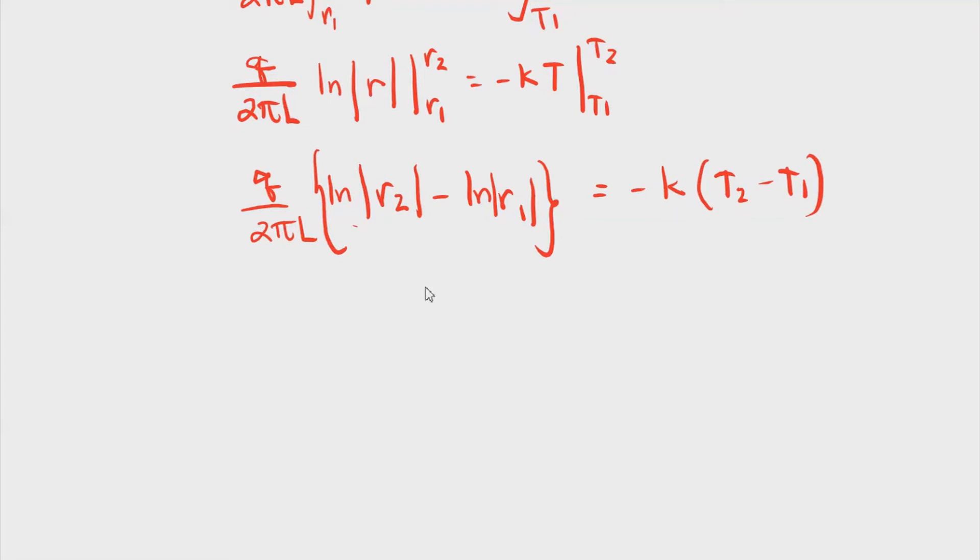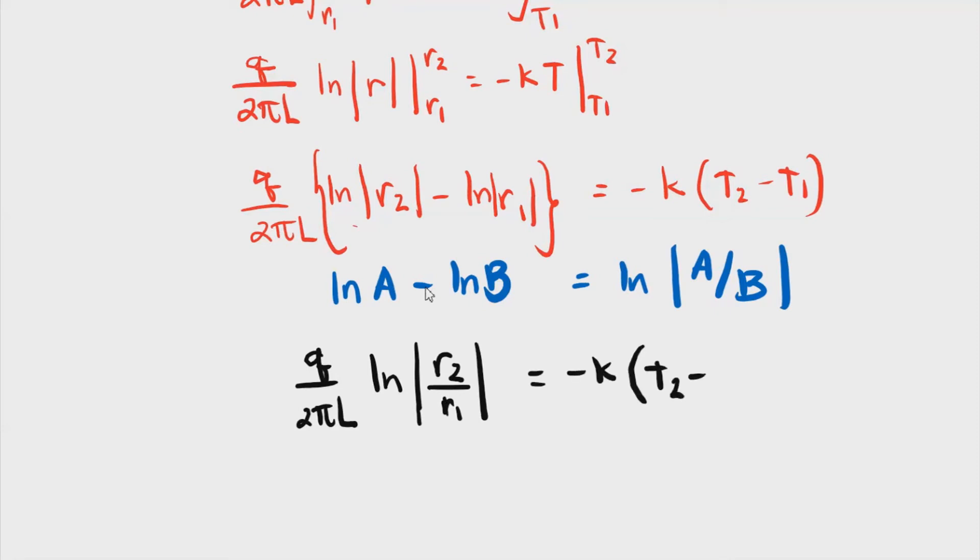So remember, this ln r sub 2 minus ln r sub 1, if you remember from logarithmic properties, we have ln of a minus ln of b. This is equal to ln of a over b. If you're in doubt about what I'm saying, try to calculate. It's the same. So if that's the case, then we can rewrite this expression now as q over 2πL, and then this one is ln of r sub 2 over r sub 1, that is equal to negative k, and then t2 minus t1.